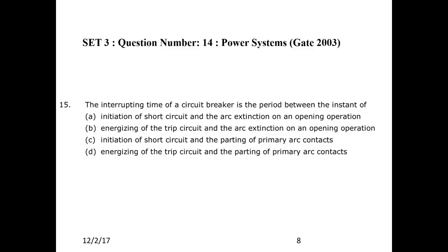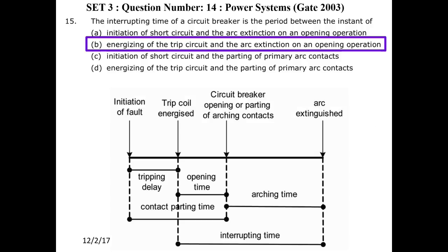Next question: The interrupting time of the circuit breaker. Once a fault is initiated, the relay senses it and sends a signal to the trip coil. Once the trip coil is energized, the breaker operates — this is the opening or operating time. After the breaker operates, the arcing contacts open, and this is the arcing time. After the arc is extinguished, the fault is cleared. The interrupting time is from the energization of the trip coil to arc extinction. Answer B is correct.